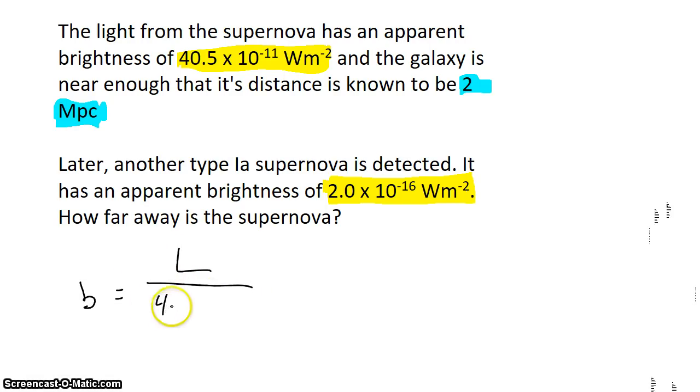4πd² is the surface area of the shell that you lie on, where the object is at the center of that circle.